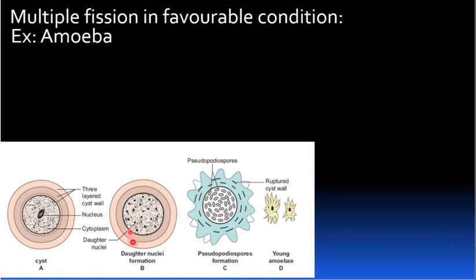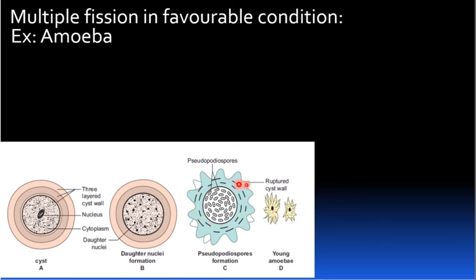The encysted amoeba undergoes multiple fission and produces many minute amoeba called pseudopodia spores. The cyst wall absorbs water and breaks open, liberating the young pseudopodia spores.